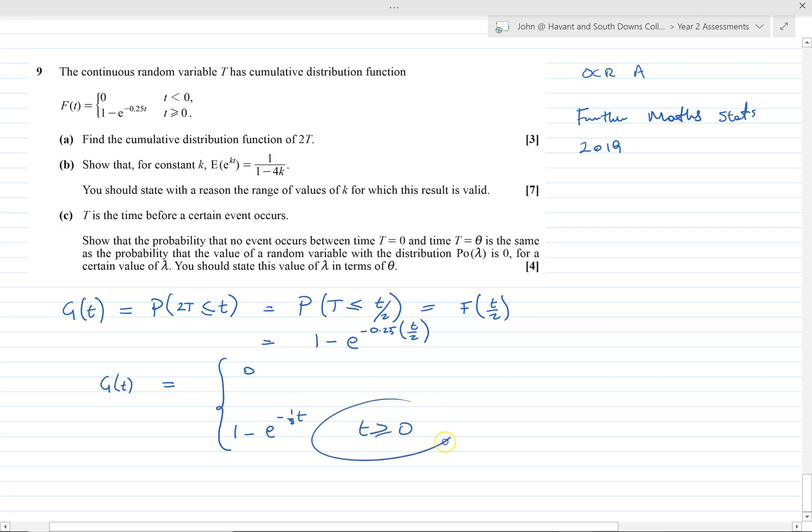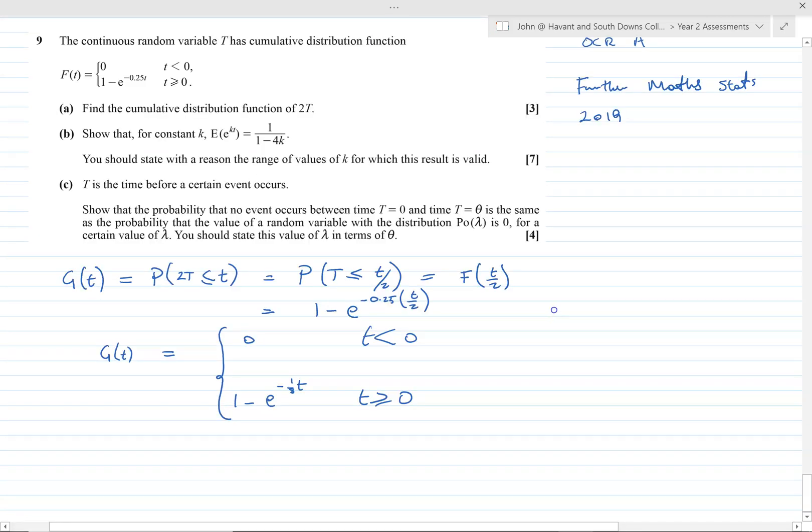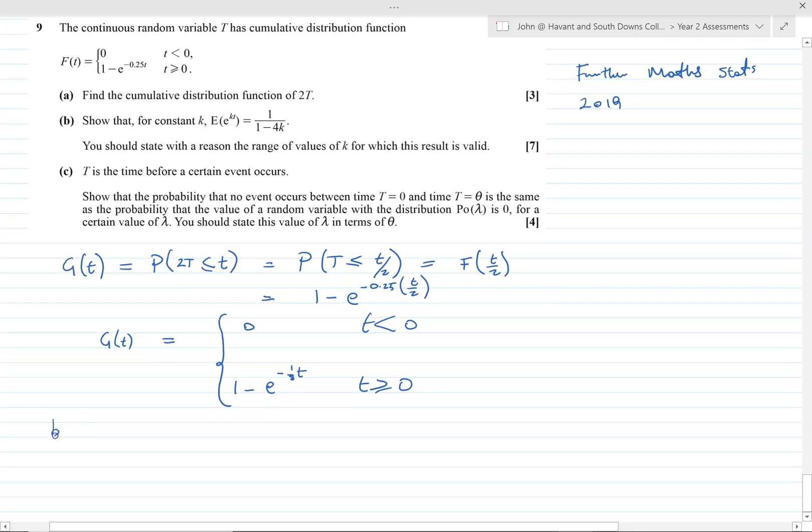Normally we'd have to change the limits if the domain was restricted in some way, but we don't here. So we're done for part A. Part B is all about finding the expectation of a function of a random variable.